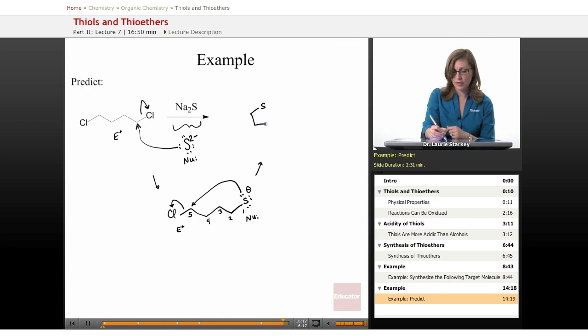So what we're going to form here, just like we could make a cyclic ether by doing an intramolecular Williamson, we can make a cyclic thioether here. We have a 5-membered ring this way.